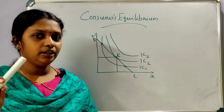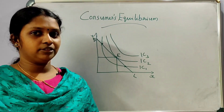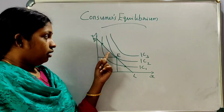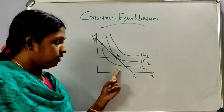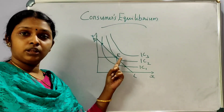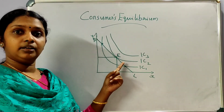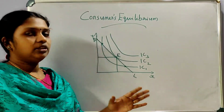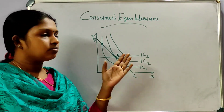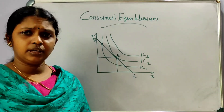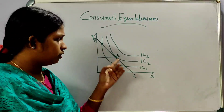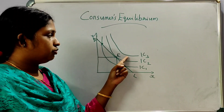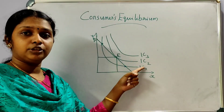A higher indifference curve gives a higher level of satisfaction. This is IC2. We have to select IC2 because it gives the highest achievable satisfaction within the budget.